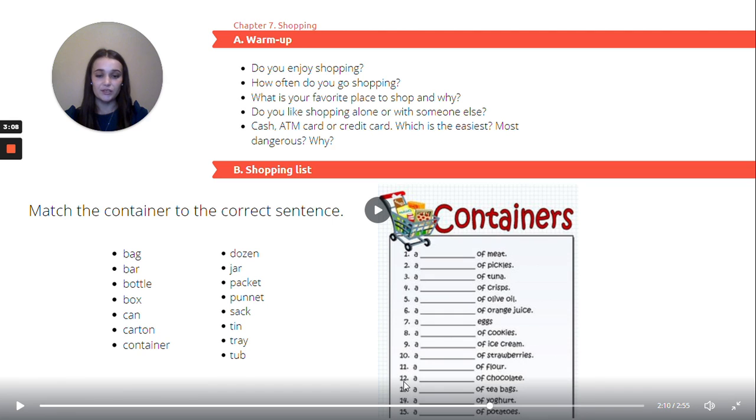Moving on. Twelve. A of chocolate. That would be a bar of chocolate. Next one. Thirteen. A of tea bags. That is a box of tea bags. Fourteen. A of yogurt. And that would be a container of yogurt. Fifteen. A of potatoes. That would be a sack of potatoes. Now the shopping list is complete. Let's move on.